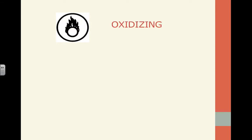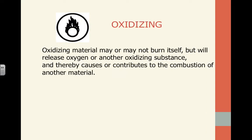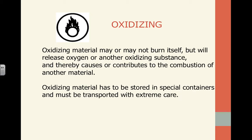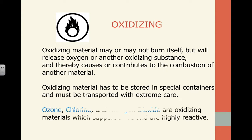Next is oxidizing material. These materials may or may not burn themselves, but they release oxygen or another oxidizing substance that can cause or contribute to the combustion of another material — essentially causing other things to burst into flame. We need to store them in special containers and take extreme care when handling or transporting them. Examples include chlorine and nitrogen dioxide, which are highly reactive and can support a fire.